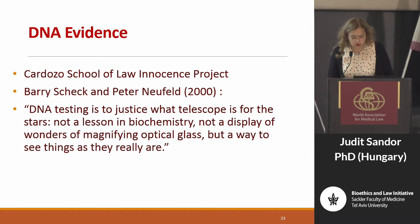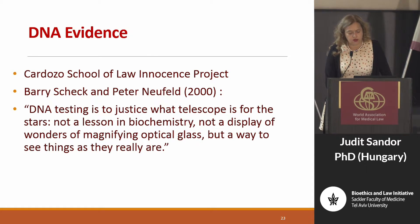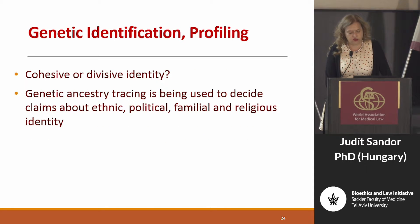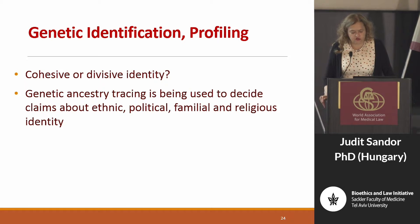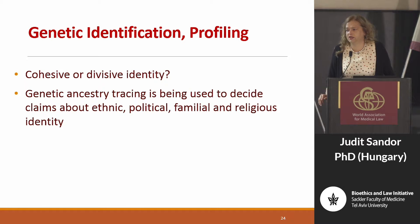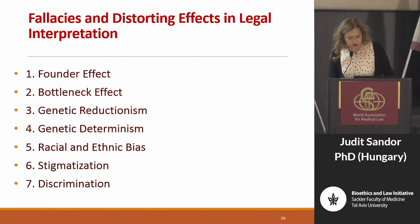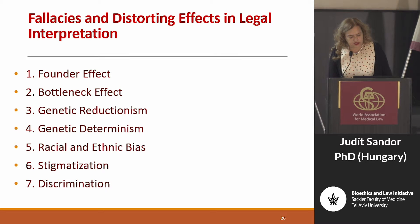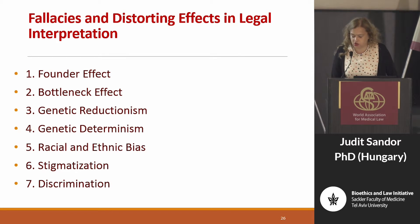Cardozo School's Innocence Project was very interesting in releasing people from prison using genetic testing. The key point on genetic identification is whether it is used for cohesive or divisive identity when profiling. Being much behind schedule, I will try to skip the fallacies and distorting effects of the legal interpretation of genetic data, though there are many of them.